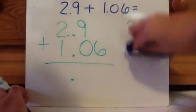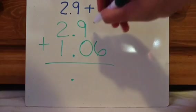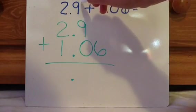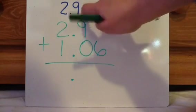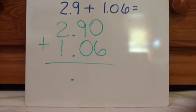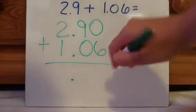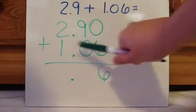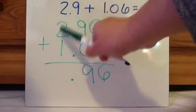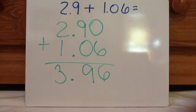So make sure you line up your decimals. Now, this is going to be weird because over here there is no hundredths place. So it's okay to put a zero there because you're saying you have zero hundredths. So now you're able to add 0 plus 6 is 6. 9 plus 0 is 9. 2 plus 1 is 3. So then the answer is 3.96.